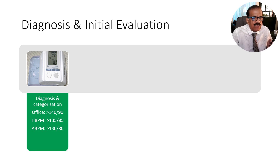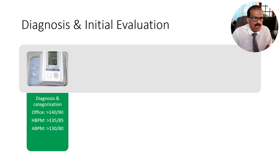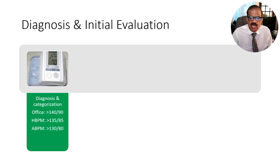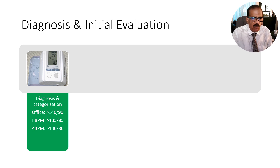Different criteria are used, but mostly we use office readings. It has to be multiple readings to call somebody hypertensive, unless a single reading is also very high. You can make the patient aware and ask them for follow-up. Only when multiple readings are above normal should you start treating hypertension. Lifestyle changes may be started even at borderline values.